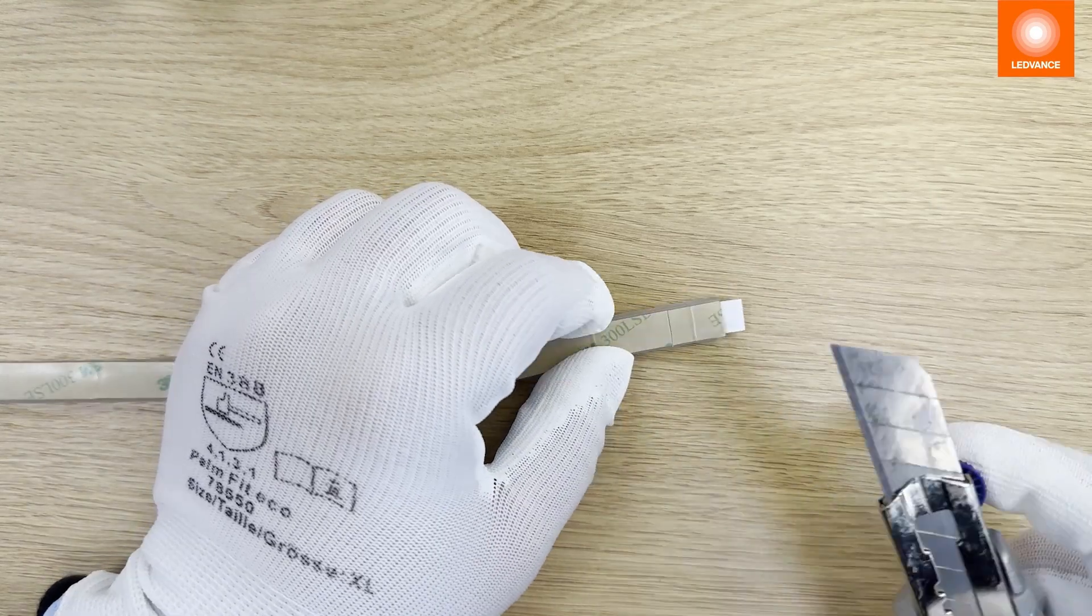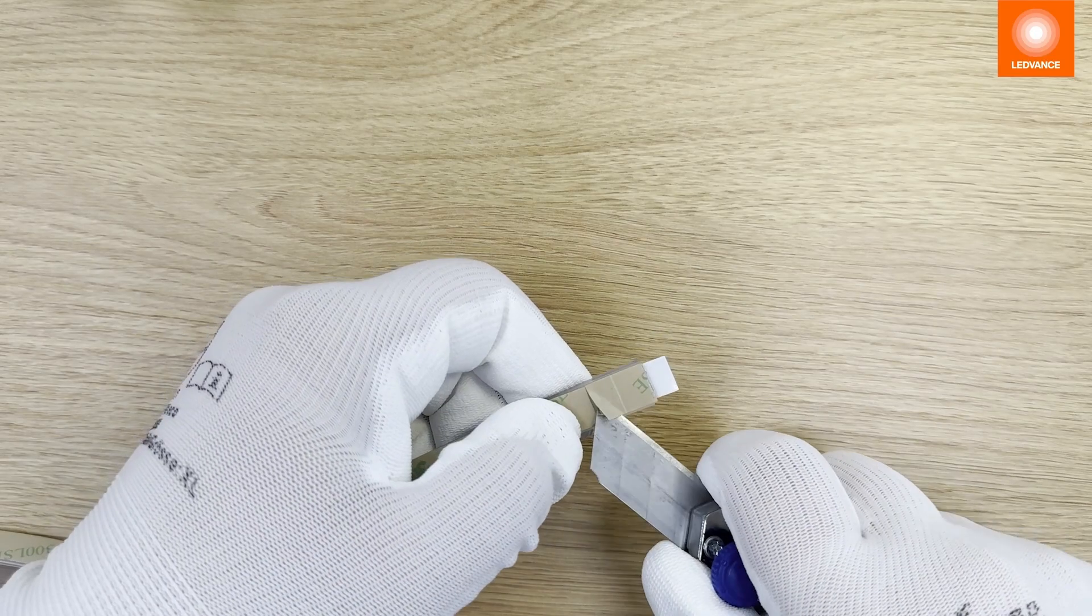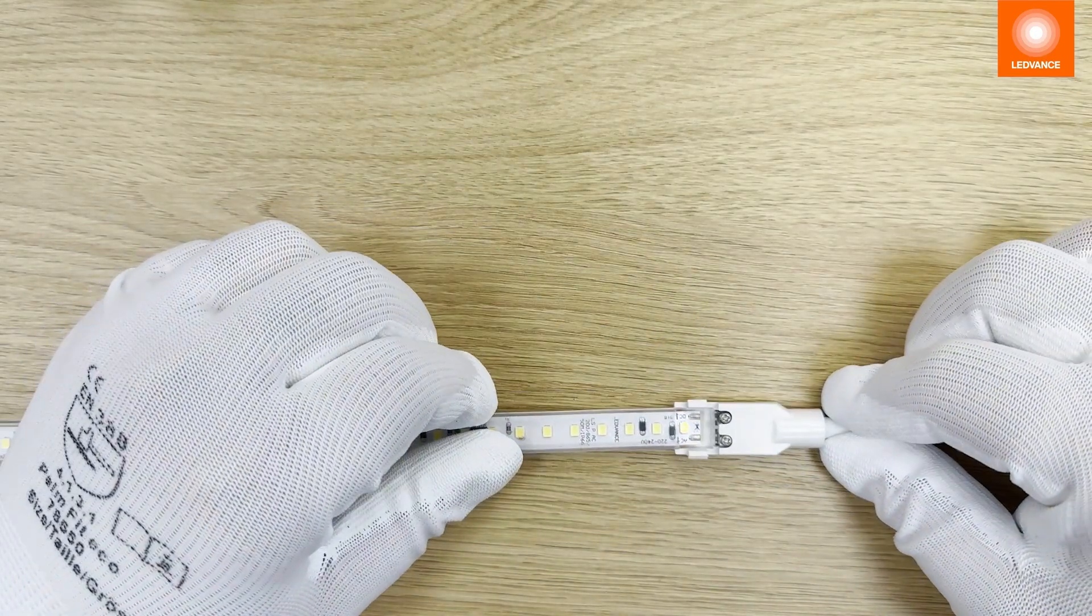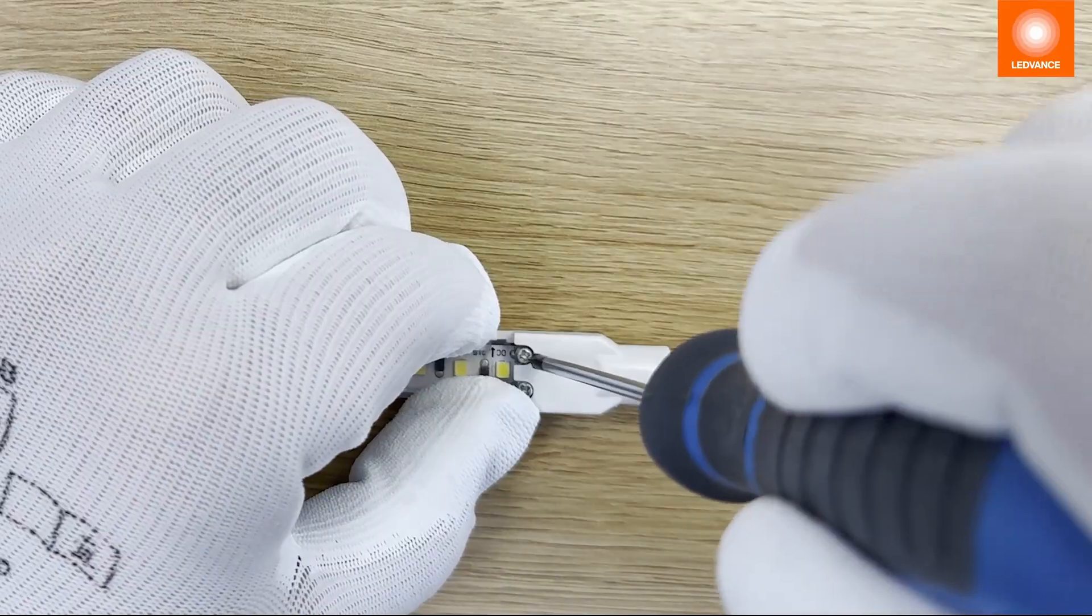Cut and remove the adhesive tape on the back. Connect the LED strip by placing the cut strip into the connector brackets and fix it with screws.